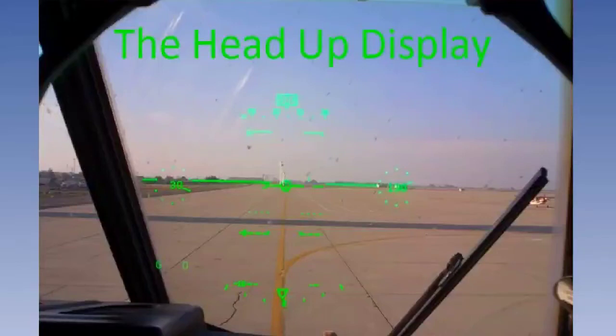A head-up display, or HUD, is a method of presenting flight information and guidance so that it appears in the sightline of a pilot looking out of the windscreen.